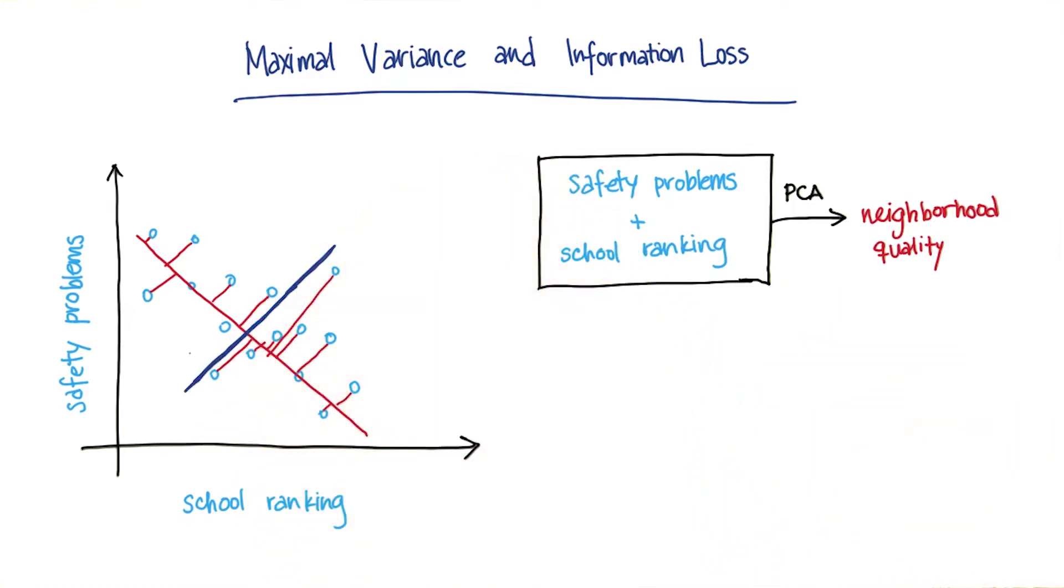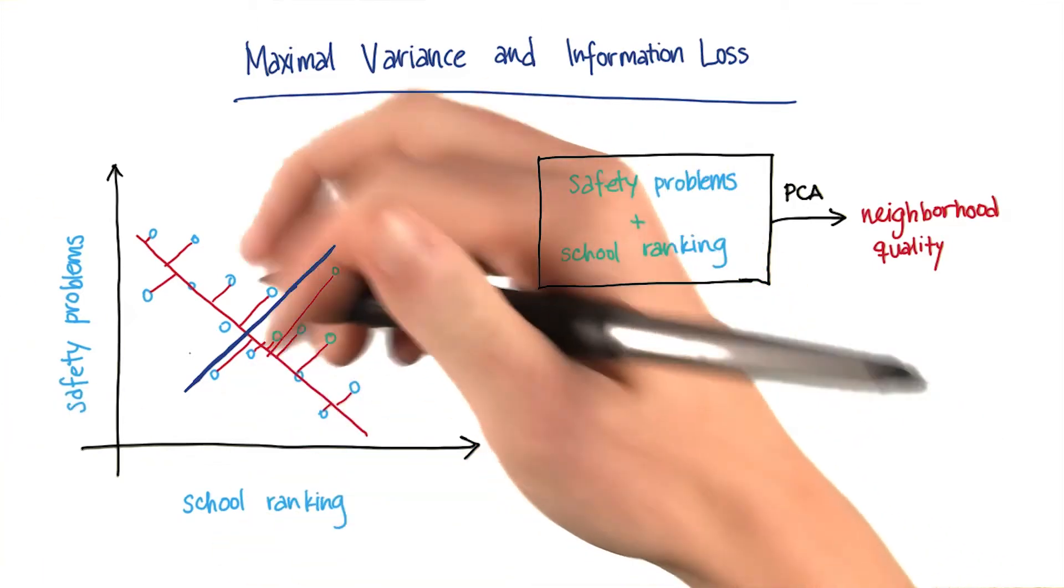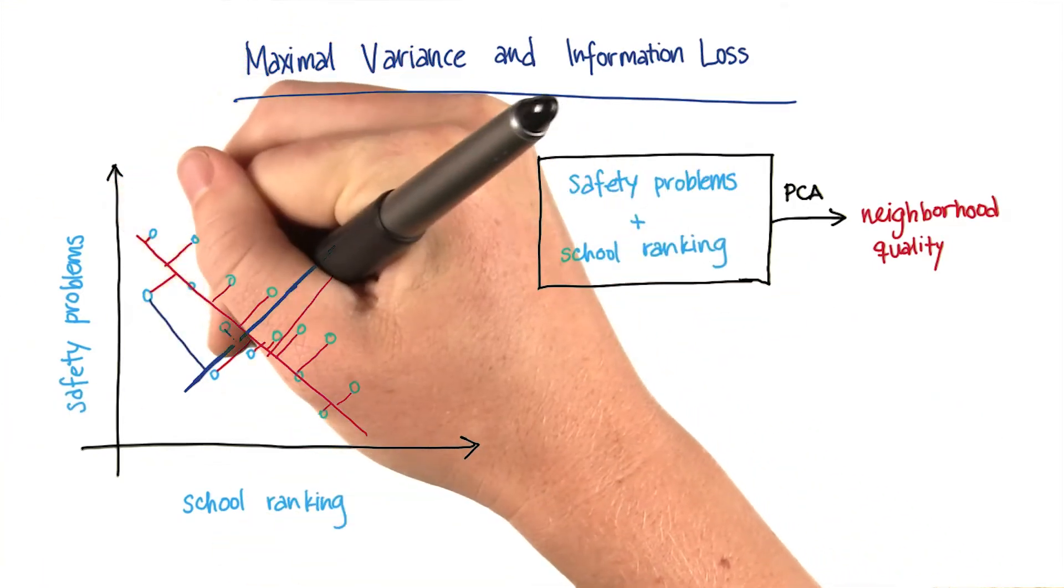Then we can ask the same question of the purple line. What's the information loss when we project all of the points down onto it? And we'll start to get something that looks like this.